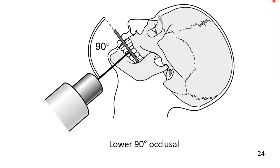Now let's see the position of the patient for the lower 90-degree occlusal view. The x-ray tube head is placed below the patient's chin, in the midline centering an imaginary line joining the first molars. The central beam strikes the film at an angle of 90 degrees to the receptor.